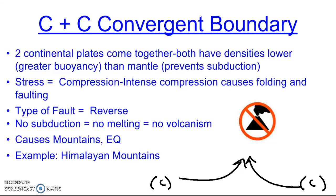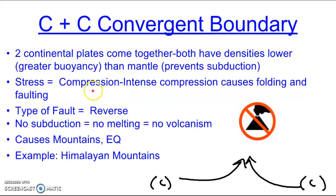Time for some notes. In your notebook, create a page for continental-continental (C+C) convergent boundary — a bit of review. This is when two continental plates come together. Both have densities lower than the mantle, which makes them more buoyant and prevents them from subducting. The stress created here is compression stress — intense compression caused by folding and faulting when two plates are pressed together. We also call this a reverse fault, and we'll see mountains and earthquakes being formed. Our example is the Himalayan mountains. Pause the video and get these notes into your notebook.